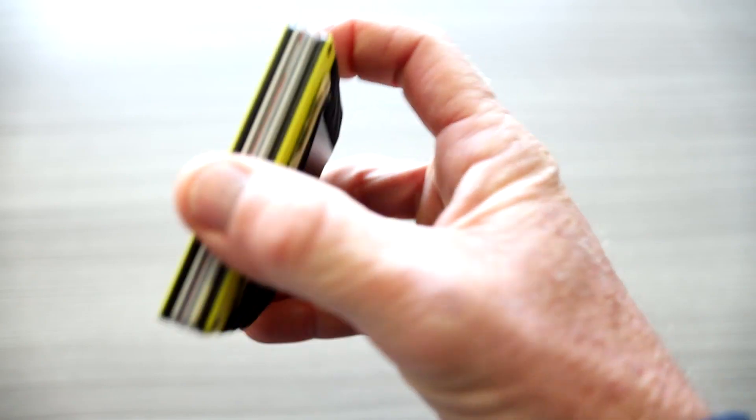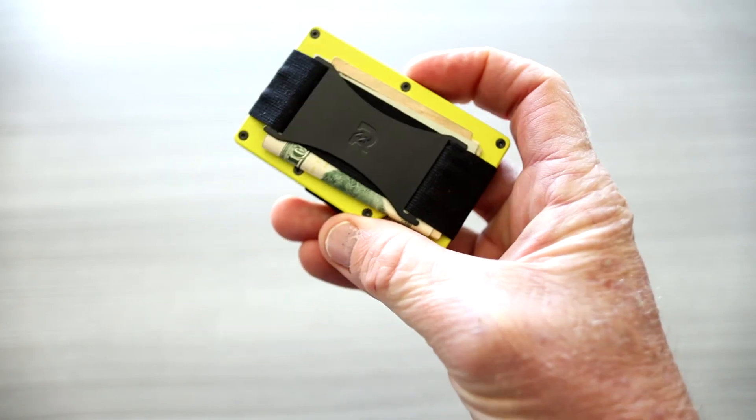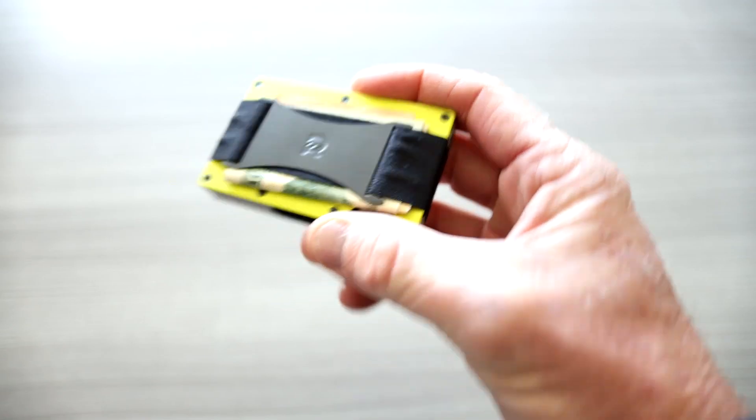As you can see, the thickness of it compared to my thumb. And then, I have two bills, I have a double shack and a dime sitting underneath my cash strap right here.